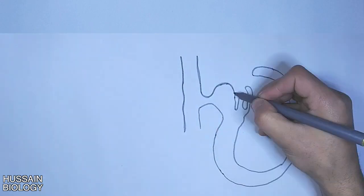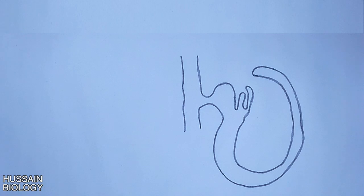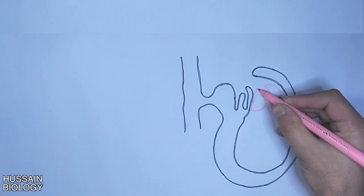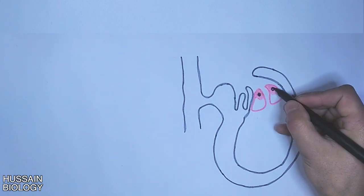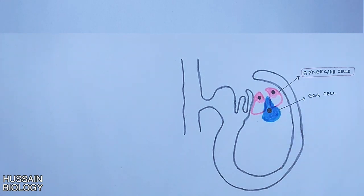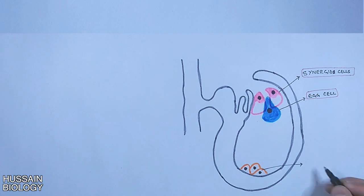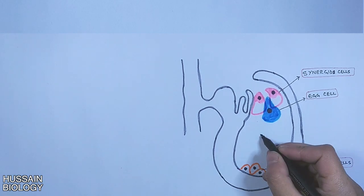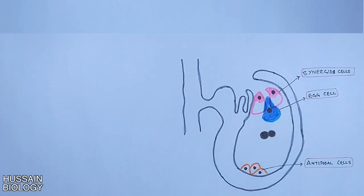In this diagram you can see the outline of the ovule. Inside the ovule there are two synergid cells shown in pink, and one important cell called the egg cell embedded in these synergid cells, shown in blue. On the opposite side there are three antipodal cells, and the rest of the space is the central cell having two polar nuclei.